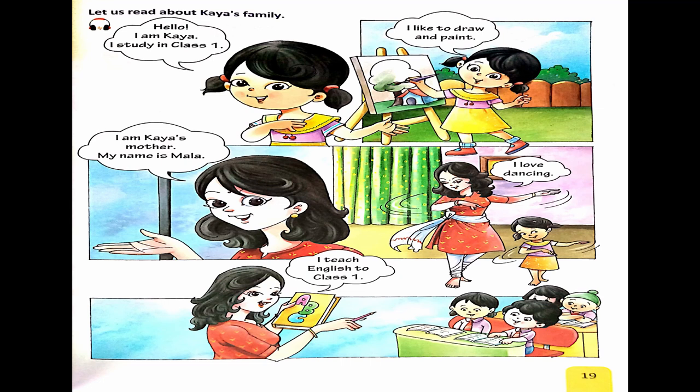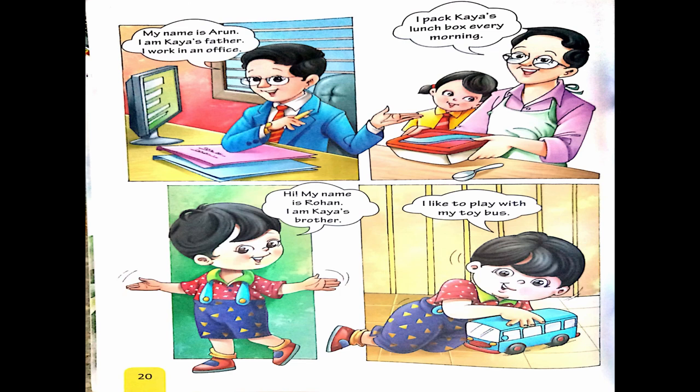'I am Kaya's mother. My name is Mala. I love dancing. I teach English to Class 1.' Kaya's mother's name is Mala. She loves dancing and she teaches English to Class 1. Which subject? English. Which class? Class 1. Very good!